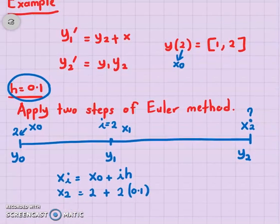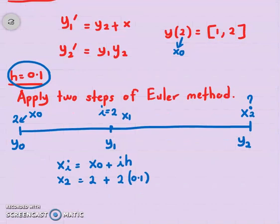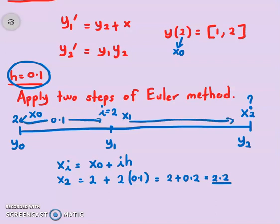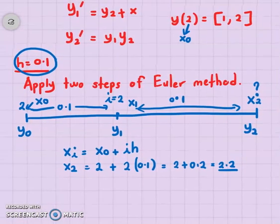So we want to find the solution at x equals 2 plus 0.2, which is 2.2. The first h is 0.1 and the second h is 0.1, so from y-naught to y2 you need a total step of 0.2. Once you have this information, you can use the Euler method starting from i equals 1 and i equals 2. The Euler method is given by y_i equals y_{i-1} plus h times f(x_{i-1}, y_{i-1}).